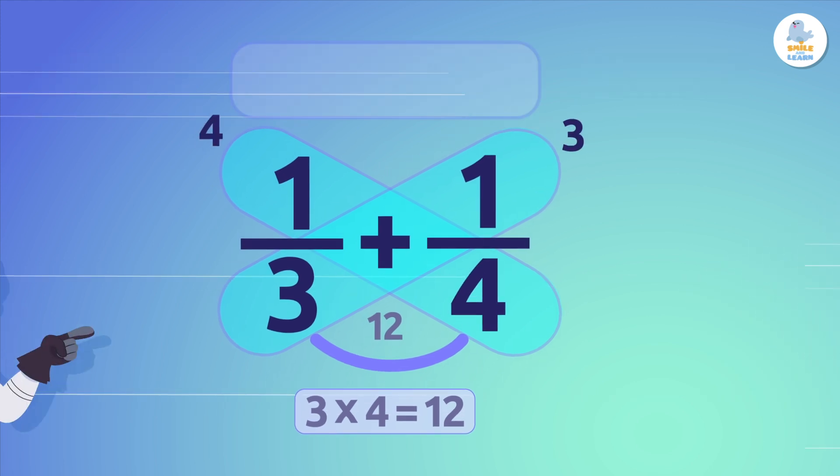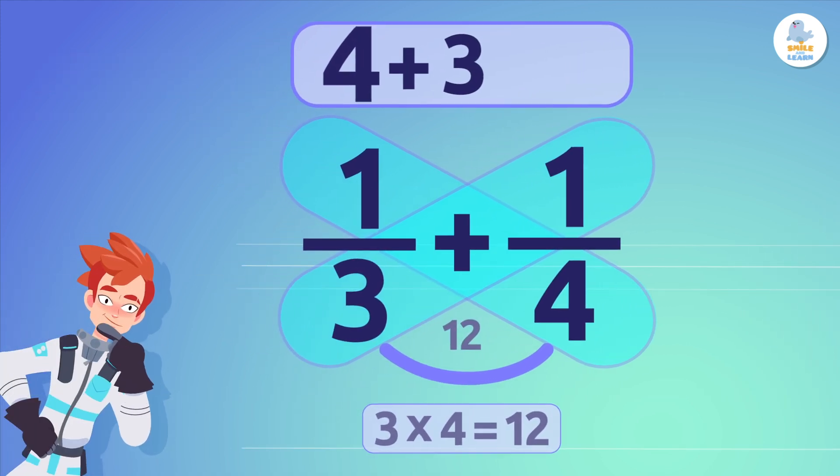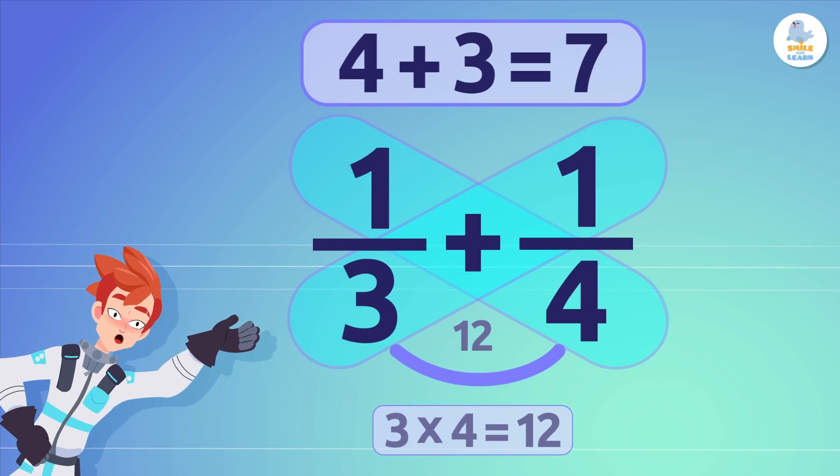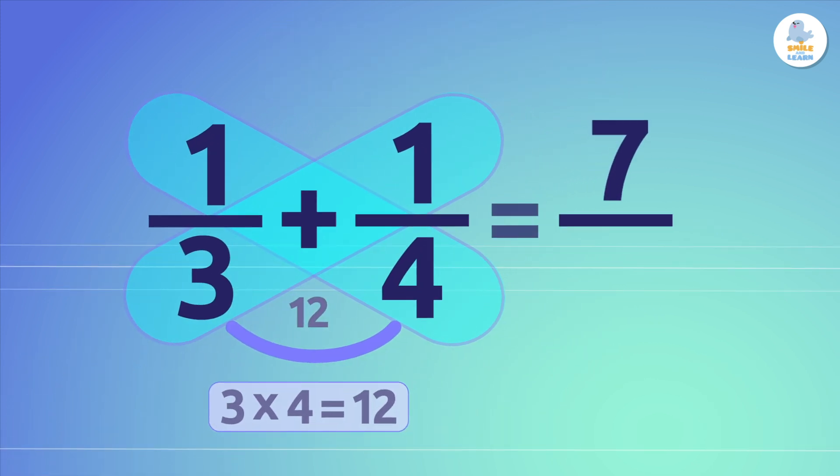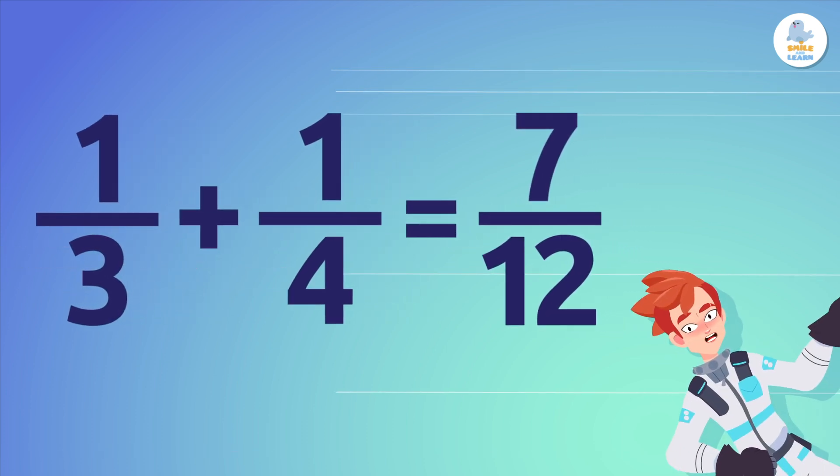Finally, we add the results of the cross multiplications. 4 plus 3 equals 7, which is the numerator of our answer. So, the result of this problem is 7 over 12, or 7 twelfths.